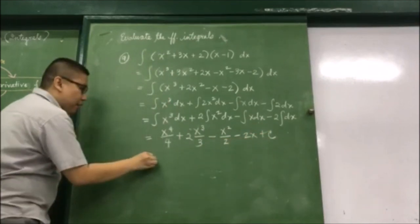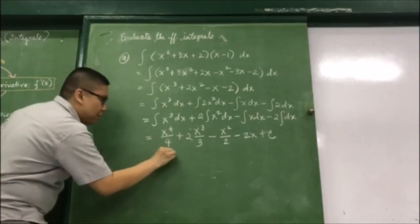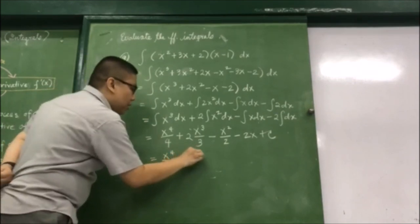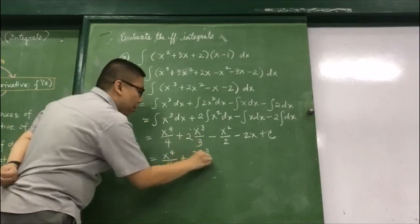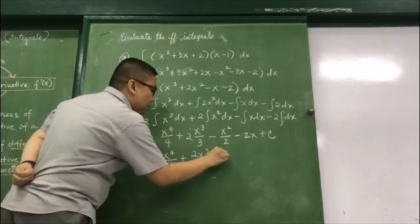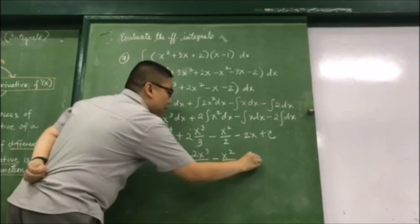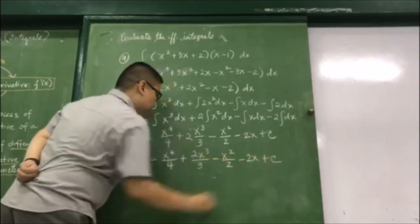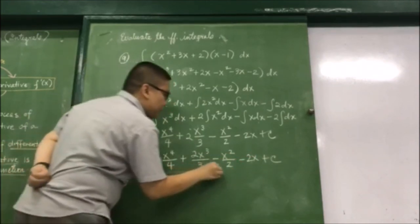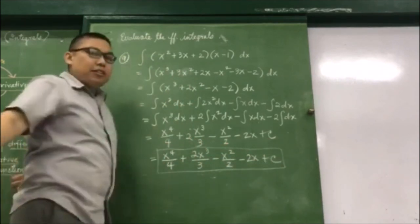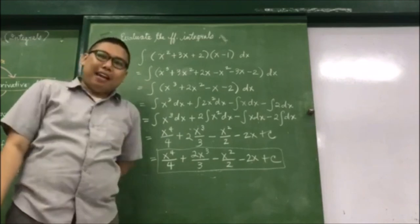So if we simplify this further, this becomes x to the 4th over 4, and then plus 2x cubed over 3, and then minus x squared over 2, and then minus 2x plus C. So therefore, that is the integral of the function.